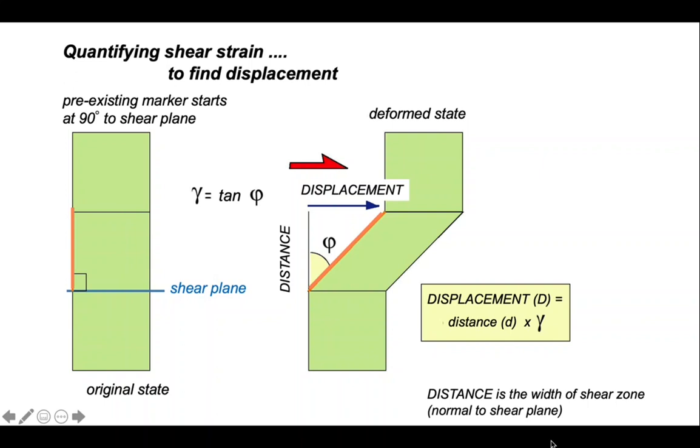Now, a pre-existing marker that is orthogonal to the shear plane, deflects over to the right, opening up an angle, phi. And gamma, the shear strain, is simply the tangent of that angle. The displacement is gamma, the shear strain, multiplied by the width across the shear zone, here labeled distance. So displacement is equal to distance multiplied by the shear strain.